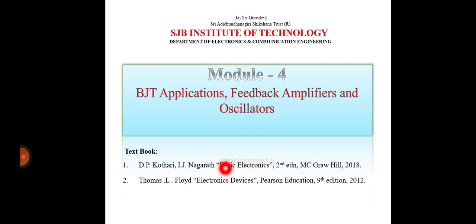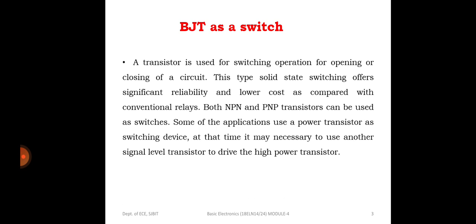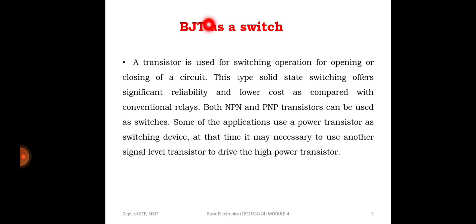We already know that a BJT is a bipolar junction transistor. We have two kinds of BJT: PNP and NPN transistors. A BJT is a three-terminal, three-layered, two-junction device. The three terminals are emitter, base, and collector. The two junctions are the emitter-base junction and the collector-base junction.